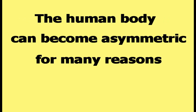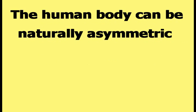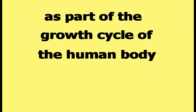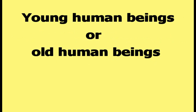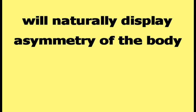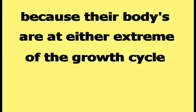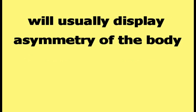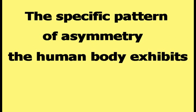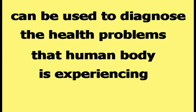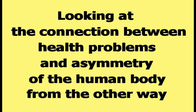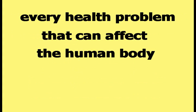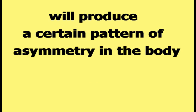The human body can become asymmetric for many reasons. It can be naturally asymmetric as part of the growth cycle — young or old human beings will naturally display asymmetry because their bodies are at either extreme of the growth cycle. A human body with a health problem will usually display asymmetry, and the specific pattern of asymmetry can be used to diagnose that health problem. Every health problem that can affect the human body will produce a certain pattern of asymmetry.